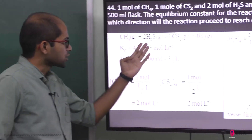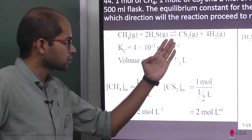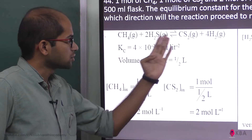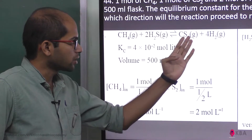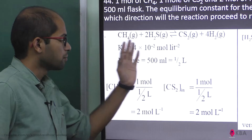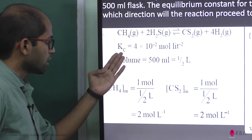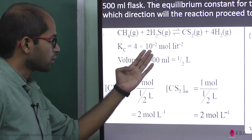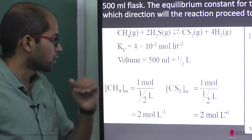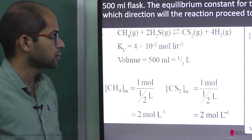The balanced chemical equation is: CH4 (methane, gaseous) + 2H2S (hydrogen sulfide) gives CS2 (carbon disulfide) + 4H2. The Kc value is 4 × 10⁻² mol per liter squared. The volume is 500 mL, that is half a liter.